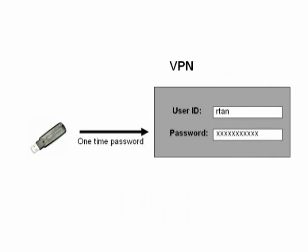If your agency has also signed up to use this service for the VPN, the TAL service can also provide additional security when logging onto your VPN. The USB token is able to generate a different password every time you log on to the VPN. You only need to remember a passcode in order to access the USB token.